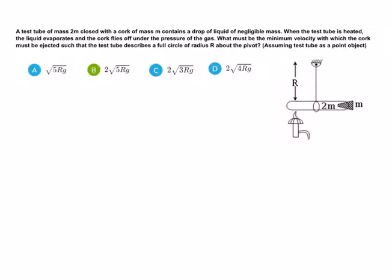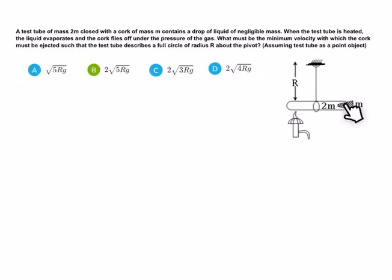Assume the test tube as a point object. देखो, question का meaning पहले समझ लेते हैं। जैसे कि आप लोग यहाँ पर देख सकते हो कि एक rigid support यहाँ पर है, और इस rigid support से एक string के साथ हमने यहाँ पर एक test tube को बाँधके रखा है इसके center में।